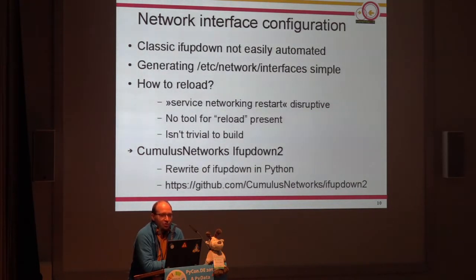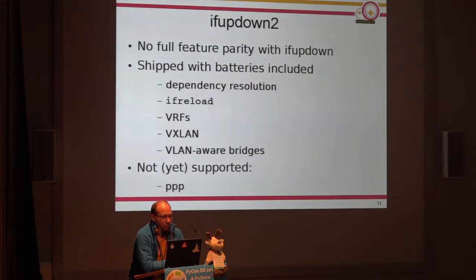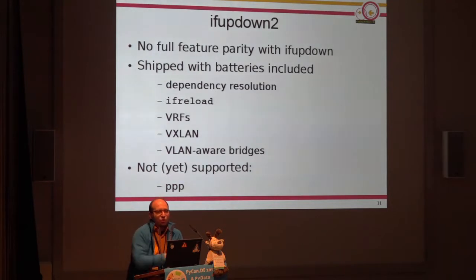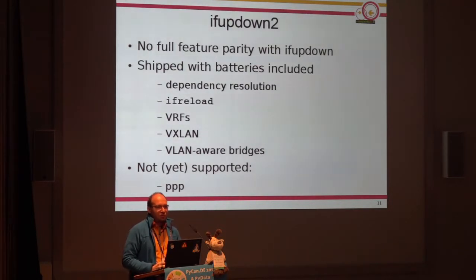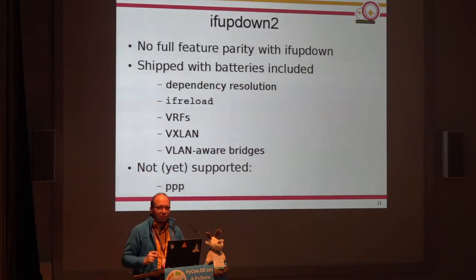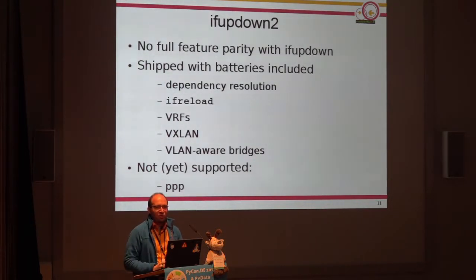But there is hope. The people from Cumulus Networks made a rewrite of ifupdown called ifupdown2. It's in Python and you can write extension modules. There is quite some feature parity between the two, but some new shiny features. ifupdown2 has dependency resolution — if you have interfaces which rely on one another, it figures out the correct order automatically. It also has 'if reload': you generate a new config file, say 'if reload', and it will reconfigure only the interfaces which changed — it will not tear down the whole networking completely.